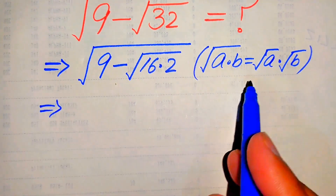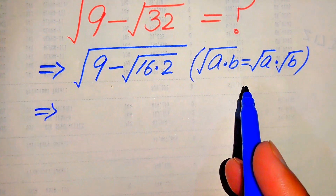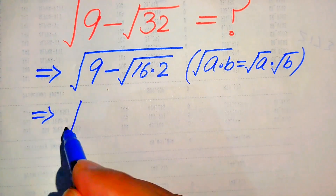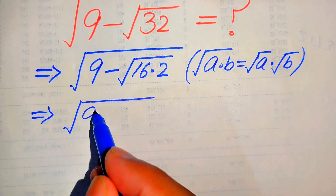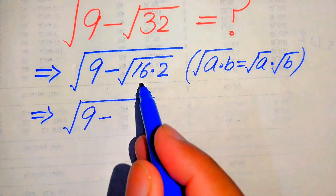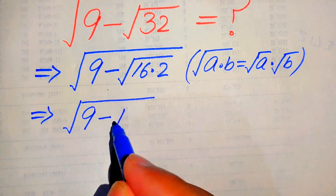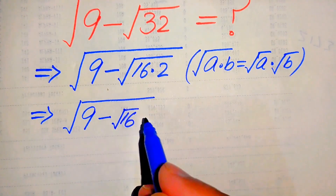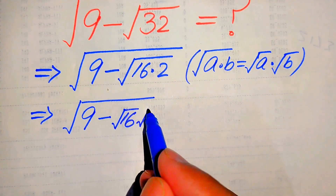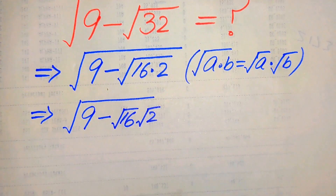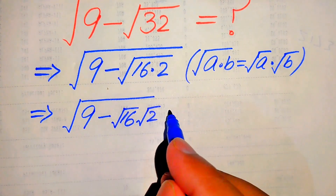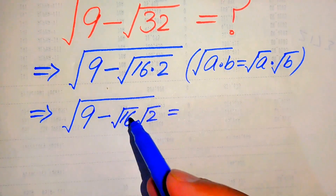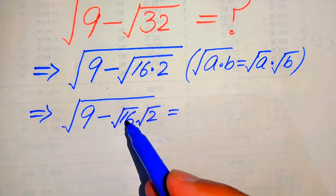According to this square root rule, we break the square root on both of these terms. It will be written as square root of 9, minus — here we separate the square root on both terms — square root of 16 times square root of 2. Now we focus on this square root term again.